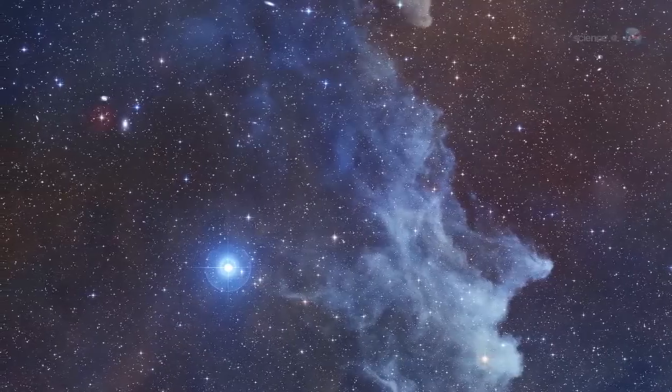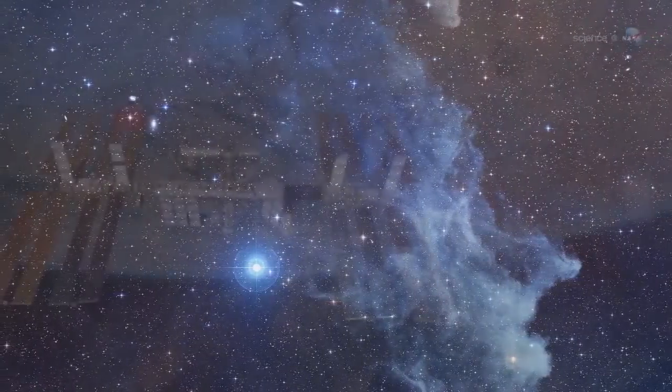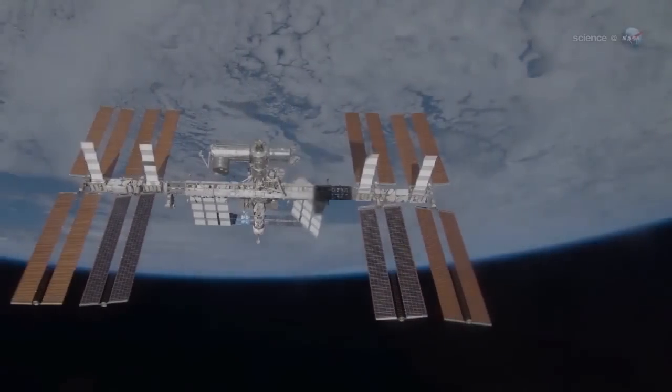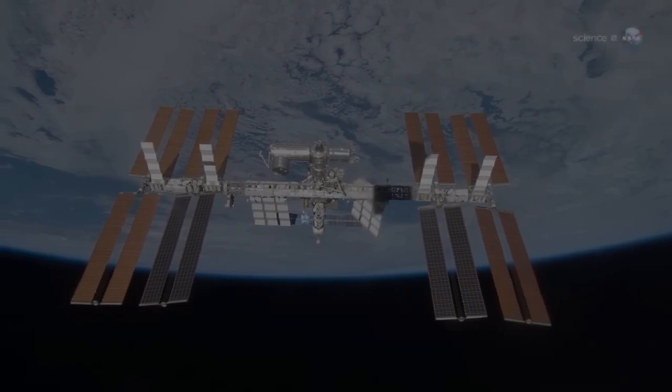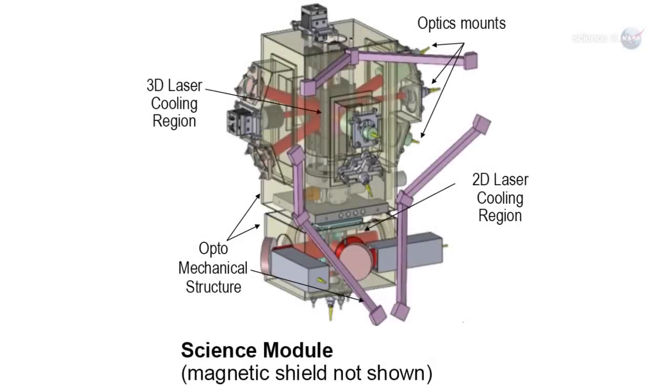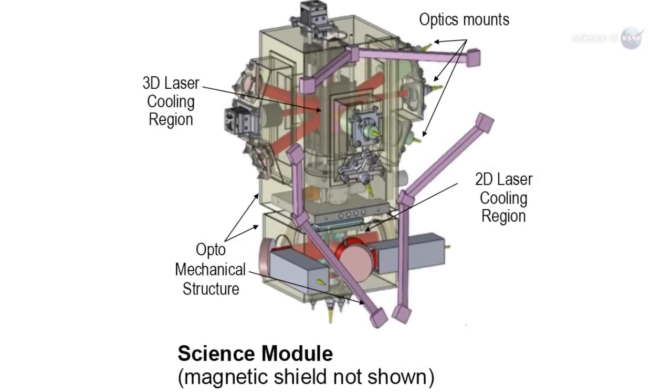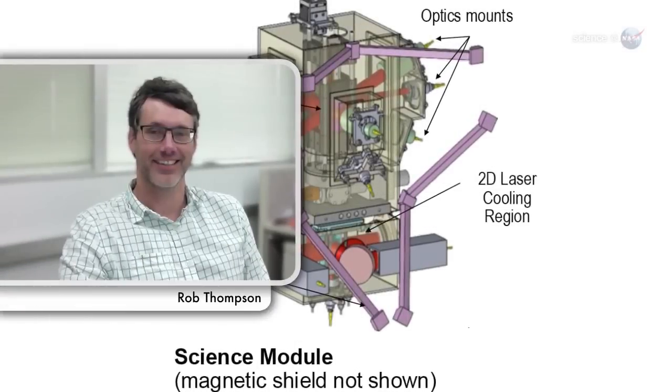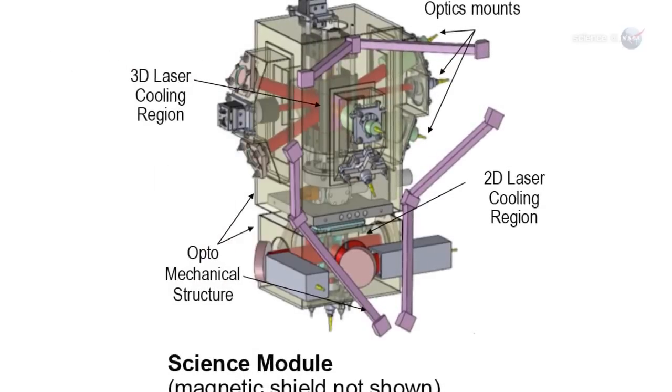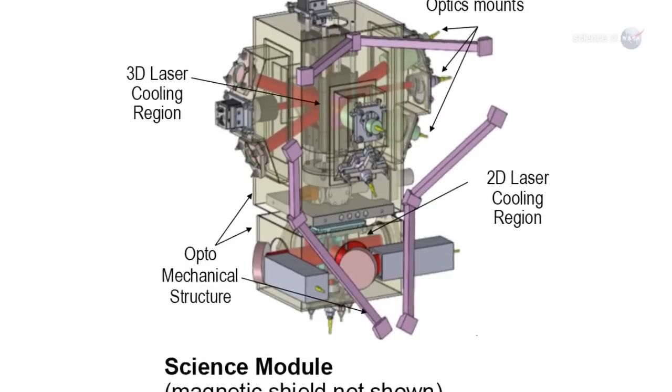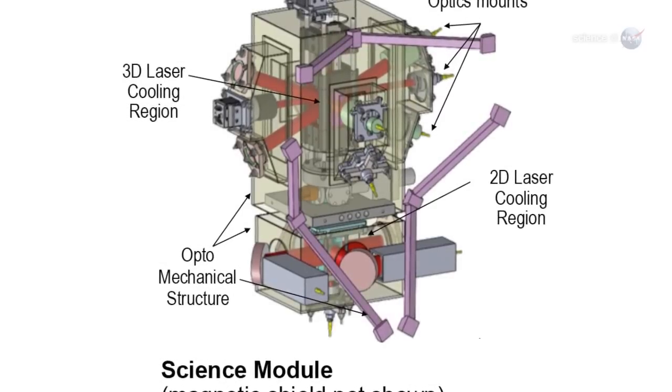It's about to get even colder. NASA researchers are planning to create the coldest spot in the known universe inside the International Space Station. We're going to study matter at temperatures far below anything found naturally, says Rob Thompson of NASA's Jet Propulsion Laboratory. He's the project scientist for NASA's Cold Atom Lab, an atomic refrigerator slated for launch to the space station in 2016.